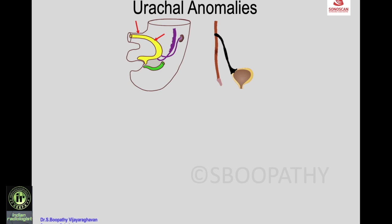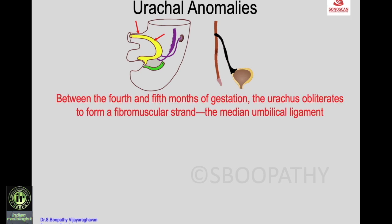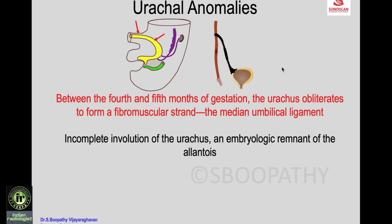Moving to urachal anomalies: between the fourth and fifth months of gestation, the urachus obliterates. The urachus communicates with the urogenital sinus and the urinary bladder, extending as the allantoic duct outside the umbilical cord. It gets obliterated to form a fibromuscular strand called the median umbilical ligament, extending from the umbilicus to the dome of the urinary bladder.